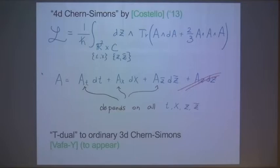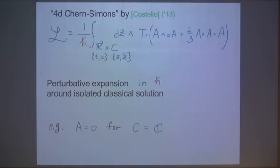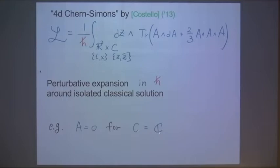There is a parameter called h-bar that sits in front of the Lagrangian. I'm going to do a perturbative expansion with respect to h-bar — specifically, around isolated classical solutions of the equation of motion. In practice it's simple: for example, when the spectral curve C is just a complex plane, I expand around the trivial connection, namely A equal to zero. Then using standard rules of quantum field theory, I can do the perturbative expansion order by order.